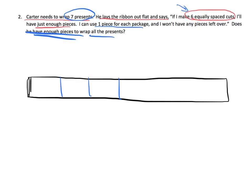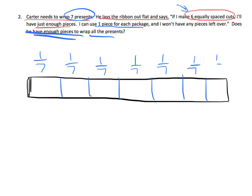We're going to make six equally spaced cuts: one, two, three, four, five, six. When I make six cuts, did I make seven pieces of ribbon for the presents? Counting the pieces: one, two, three, four, five, six, seven. Yes! So each one of these is one-seventh.